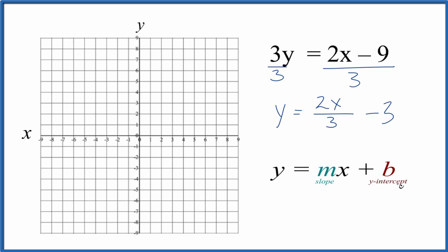So now we have this in slope-intercept formula. We go to the y-axis here, we find negative 3. That's our y-intercept. That's where the line is going to go through the y-axis.